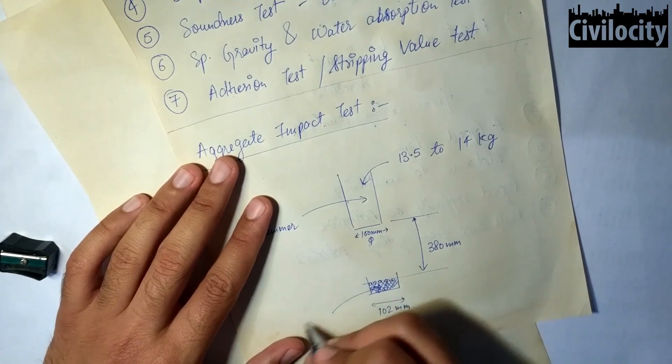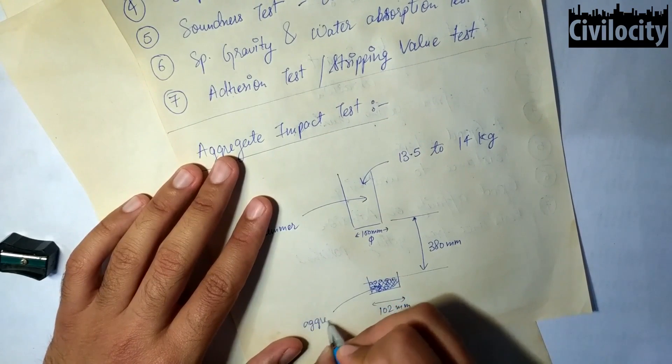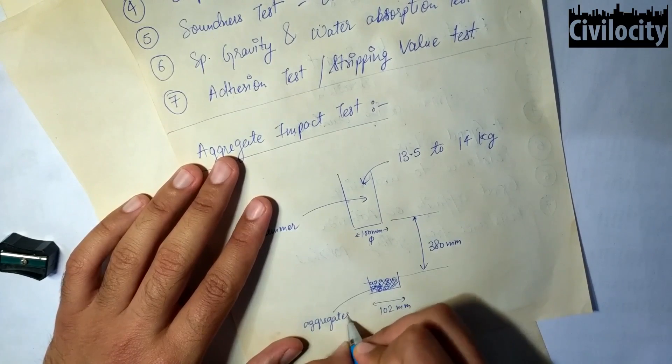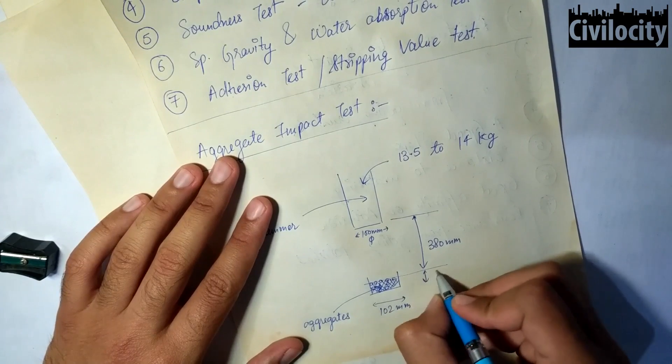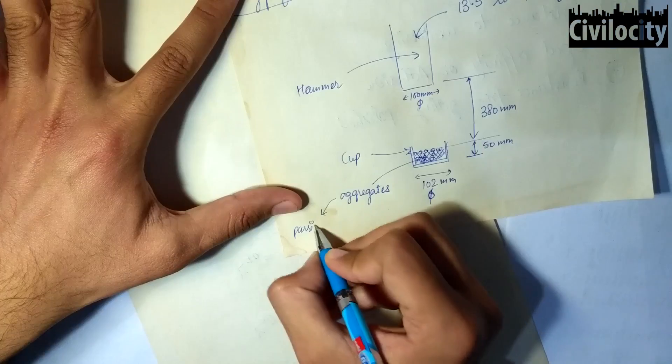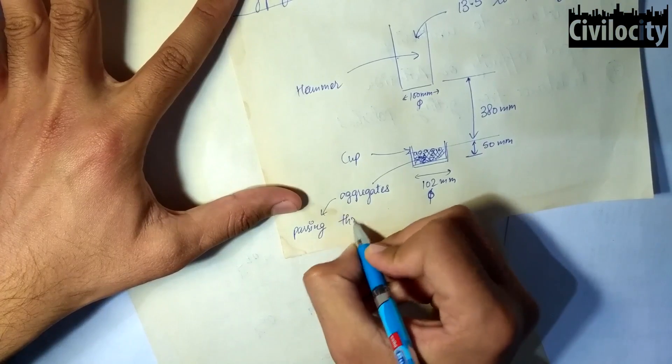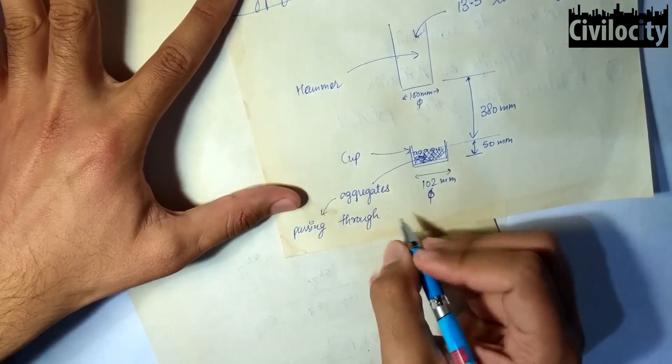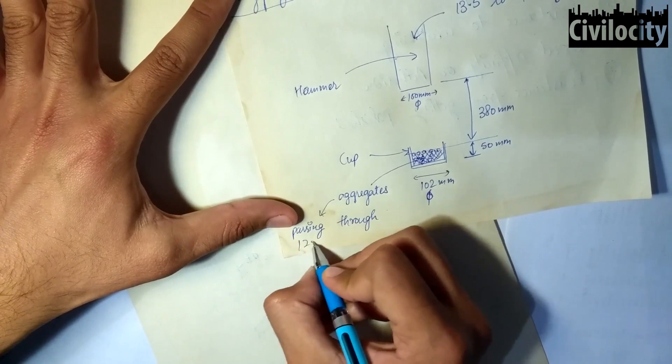The apparatus consists of a hammer of weight 13.5 to 14 kg which is dropped from a height of 380 mm into a cup of diameter 102 mm in which aggregates are filled up to a height of 50 mm. And the diameter of this hammer is 100 mm.